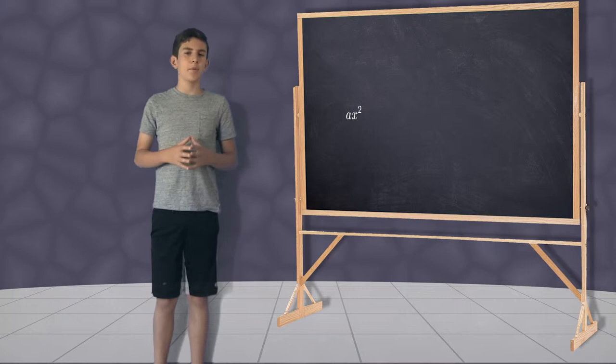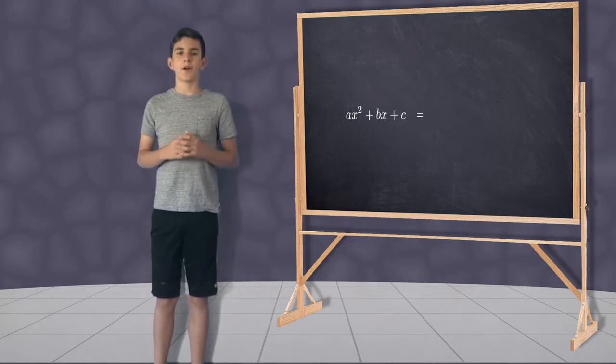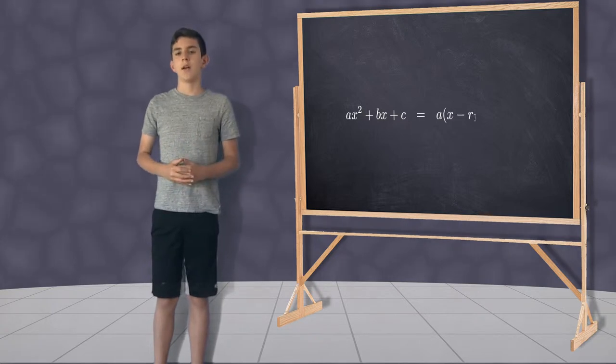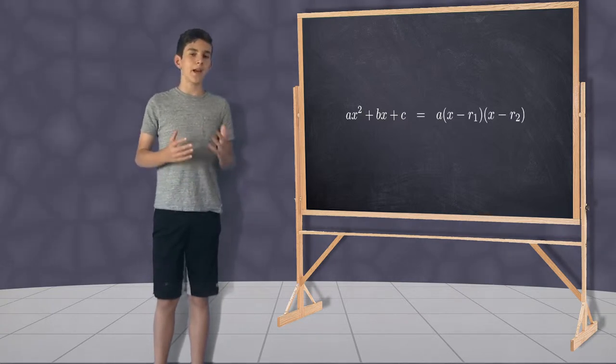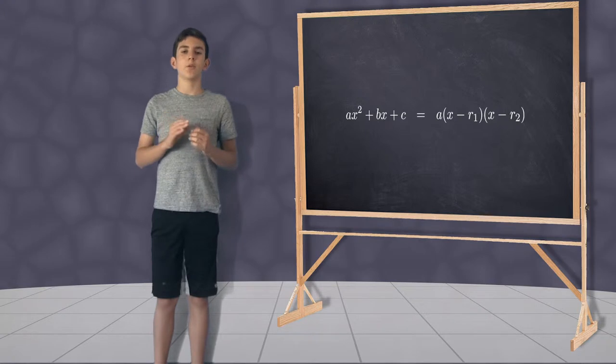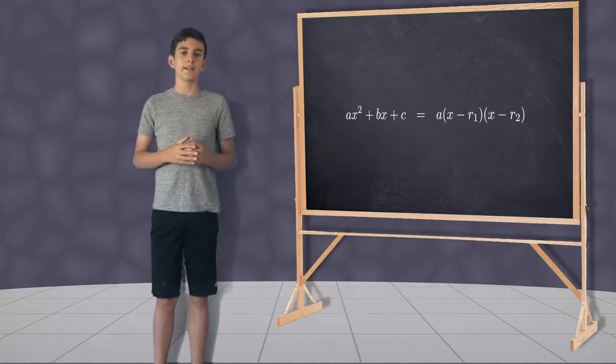In a quadratic polynomial, the highest order of a variable is 2. I assume you already know how to factorize a polynomial. When we factorize the expression on the left, we find it has value 0 when either x minus r1 or x minus r2 is equal to 0.